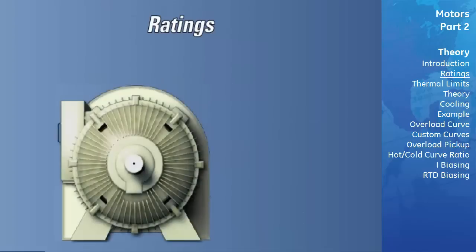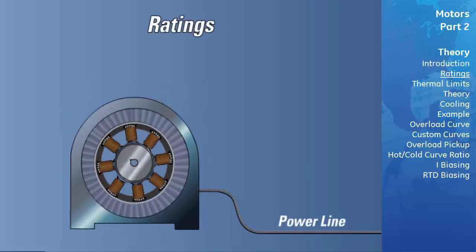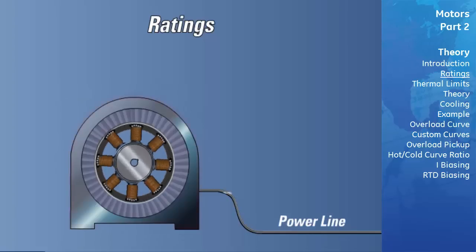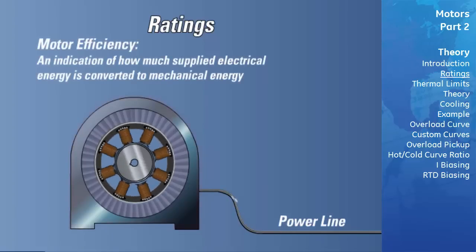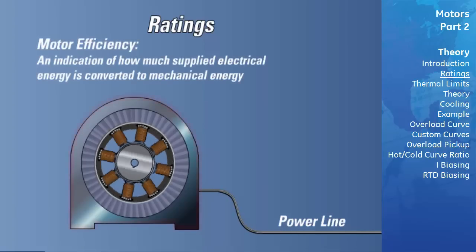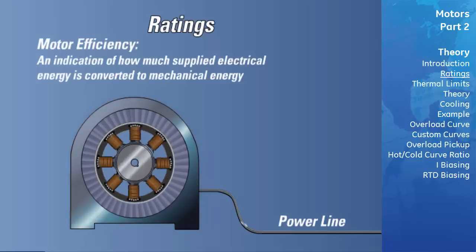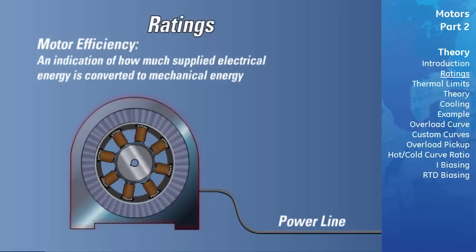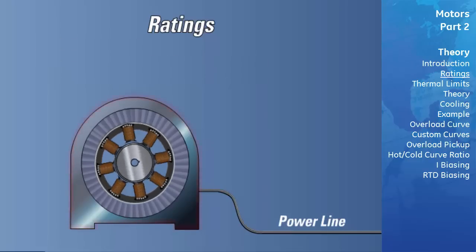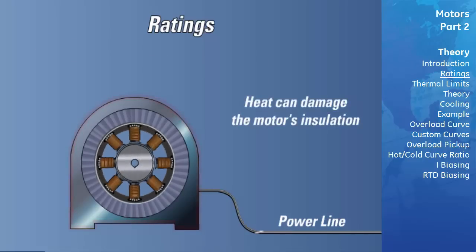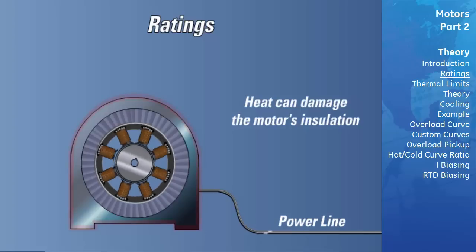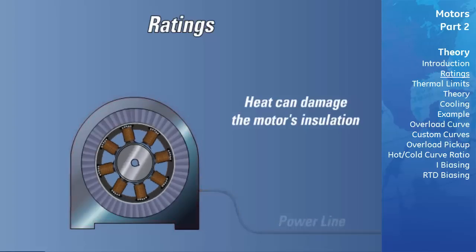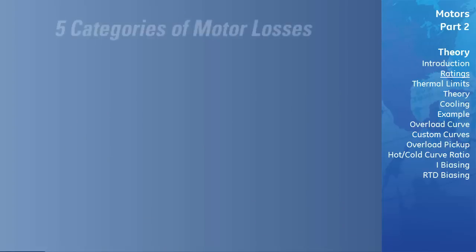One of the most common motor terms is motor efficiency. Motor efficiency is an indication of how much of the electrical energy supplied to the motor is converted into output shaft mechanical energy, and is expressed as a percentage. The rest of the energy is lost primarily in the form of heat, which can be damaging to the motor's insulation. There are five categories of motor losses.